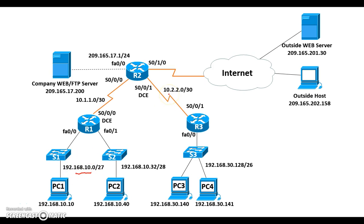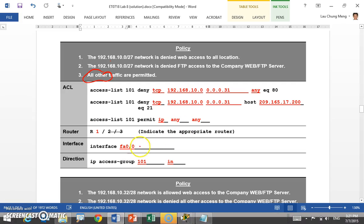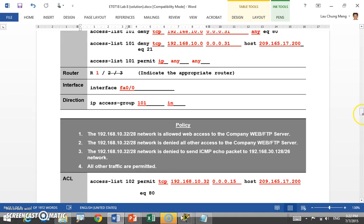Where do we implement ACL 101? Remember, extended ACL should be placed as close to the source as possible. The source network is connected to R1, so we implement ACL 101 on R1. The closest interface to that source network is Fa0/0, and the direction of traffic from that network is going in — so we apply it inbound on Fa0/0.